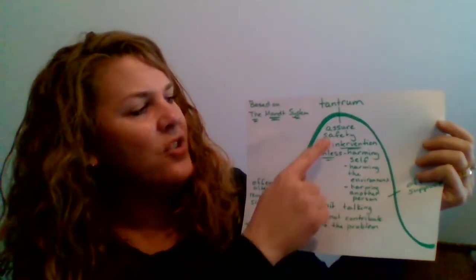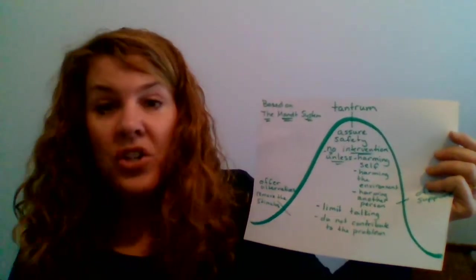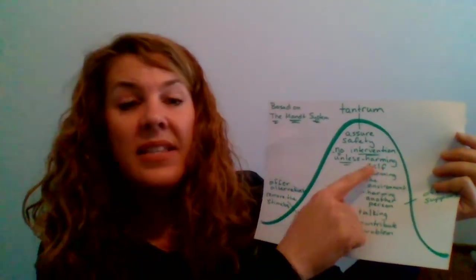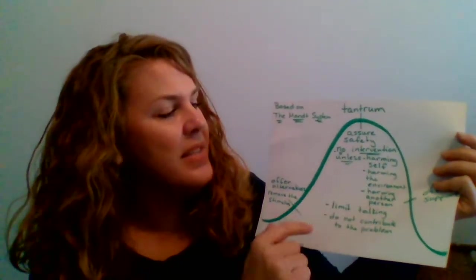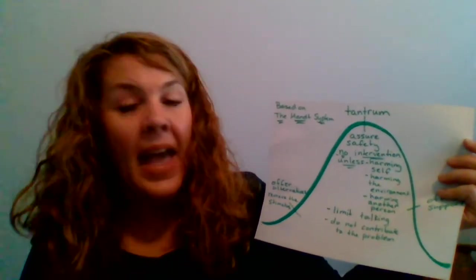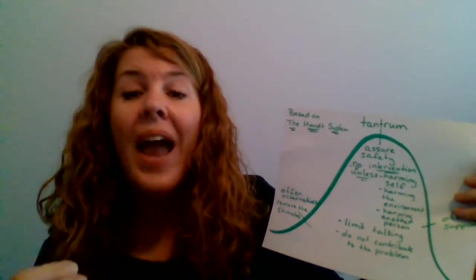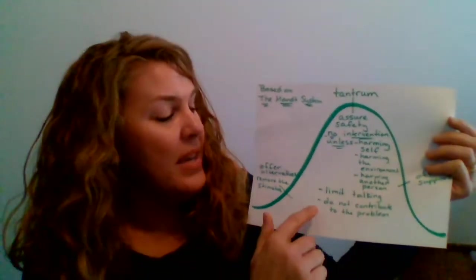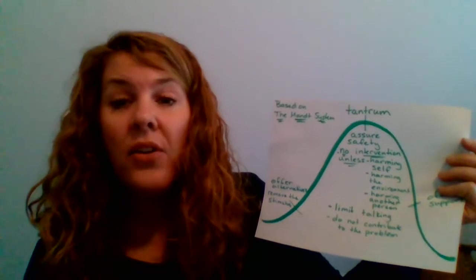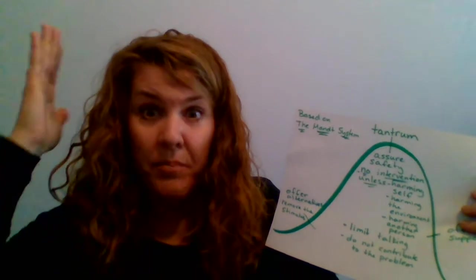So during the tantrum, you want to assure safety. There will be no intervention. That means no talking. You're ignoring the behavior unless the child is harming himself, harming the environment, or harming another person. Again, you're limiting the talking, not saying anything at all, because your extra noise can be contributing to the problem. So being an effective communicator is just assuring safety at that time, and that's when you want to block.